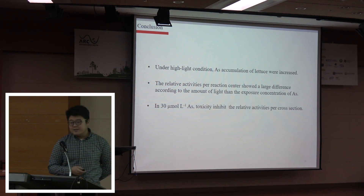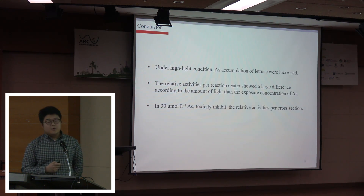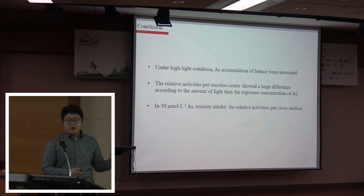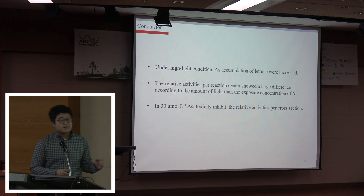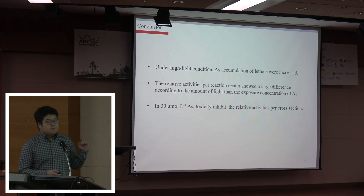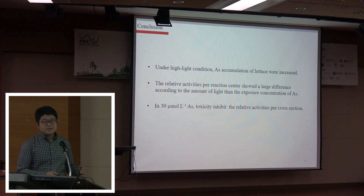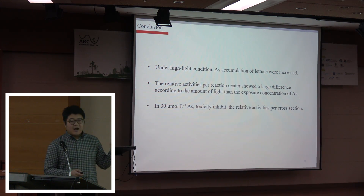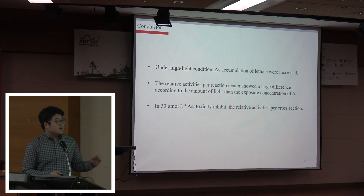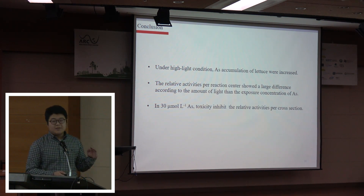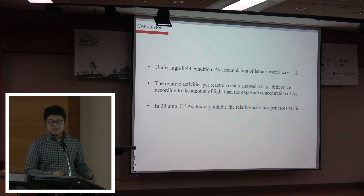With this research, we can see that light intensity is the main factor for plant growth and photosynthesis. However, if the environment is contaminated with high concentrations of arsenic, high light intensity can also promote arsenic accumulation in the plant body and disturb photosynthesis.